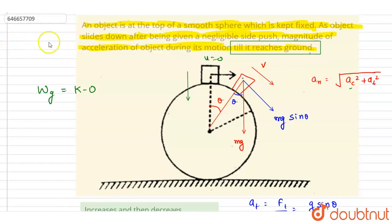Till it reaches the ground. So if you see, when it reaches here, then its normal reaction will become zero. If you see, it was given negligible push, so at some point